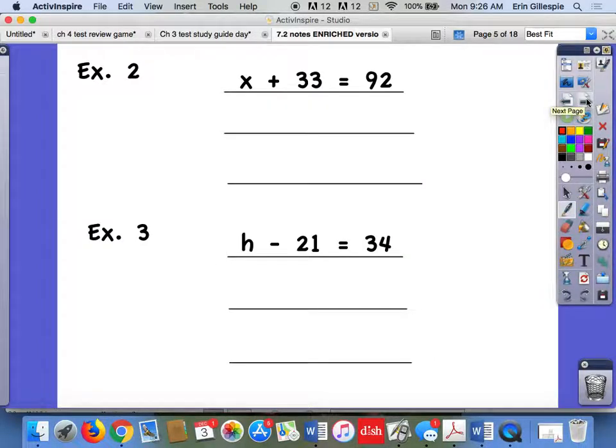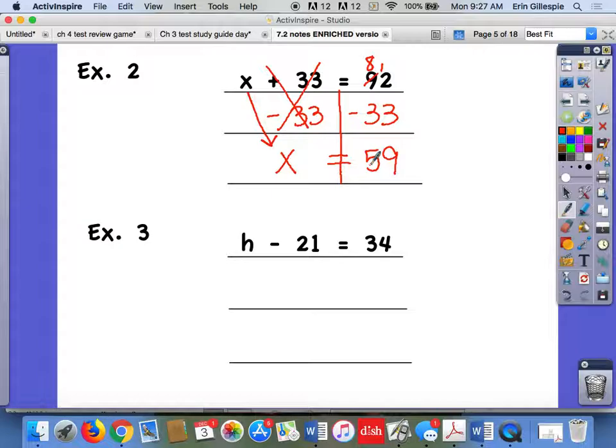All right, let's look at another example. X plus 33 equals 92. So draw a line, your equal sign, find the variable, figure out what's happening in the variable. We're adding 33. So I'd ask myself, what's the opposite of adding? It's subtracting. So I want to subtract 33 from both sides. Over on this side, that would cancel out. So I just bring down my X, bring down my equal sign. Over here I need to subtract. So I can't do 2 minus 3. I'll need to borrow. 12 minus 3 is 9. 8 minus 3 is 5. So I get X equals 59.